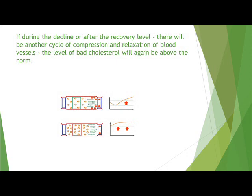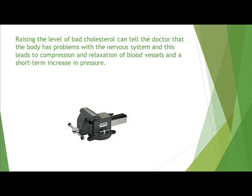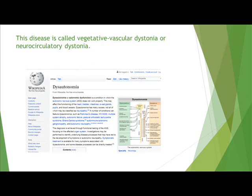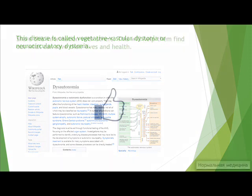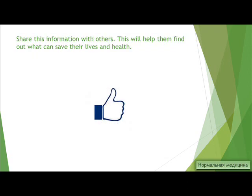If during the decline or after recovery of the level there is another cycle of vessel compression and relaxation, the level of bad cholesterol will again rise above the norm. An elevated level of bad cholesterol can tell the doctor that the body has problems with the nervous system, leading to compression and relaxation of blood vessels and short-term increases in pressure. This condition is called vegetative vascular dystonia or neurocirculatory dystonia.